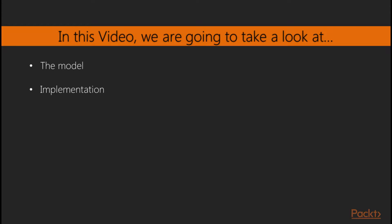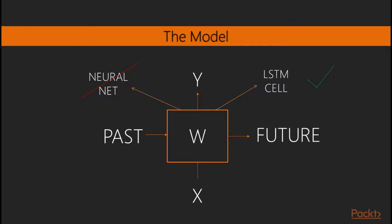In this video, we are going to take a look at the LSTM model and its implementation. Recurrent neural networks take a past input, a new input, produce a prediction, and connect to the future. In the middle of that, there is a simple layer. However, they perform badly at catching relationships in long sequences, since they forget the past. Moreover, stacking them to build more complex models doesn't work well.